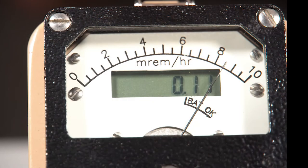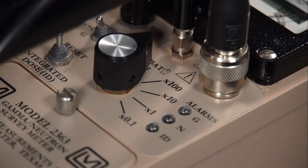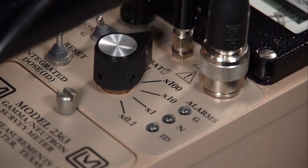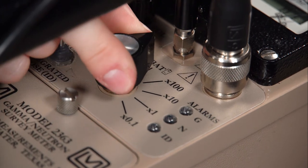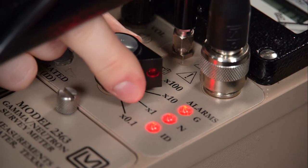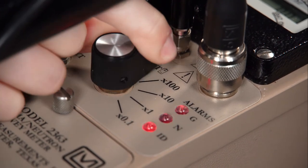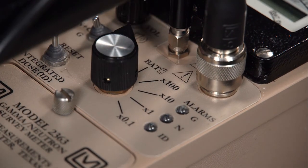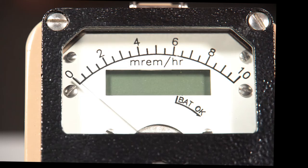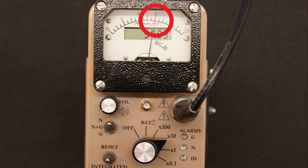Moving the range selector switch to one of the range multiplier positions—times 100, times 10, times 1, times 0.1—provides the operator with an overall measuring range of 0 to 1000 mrem per hour. Multiply the scale reading by the multiplier to determine the actual reading.